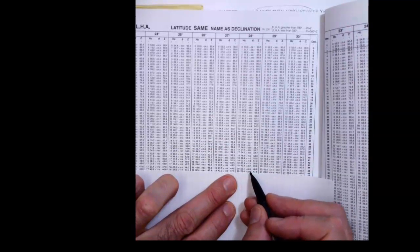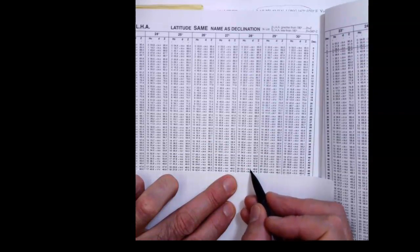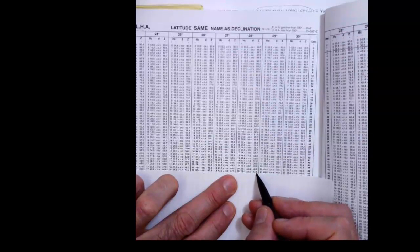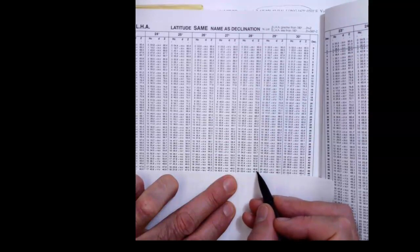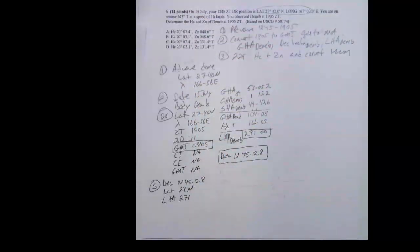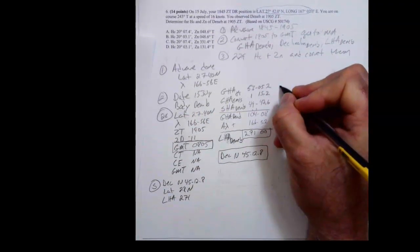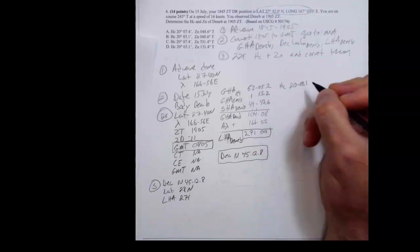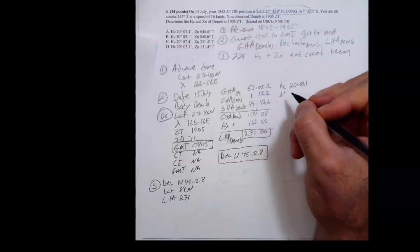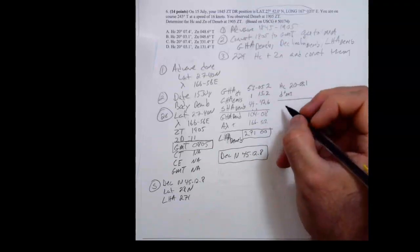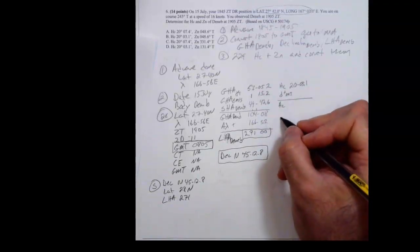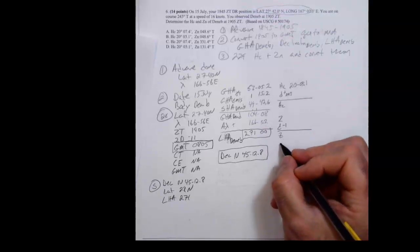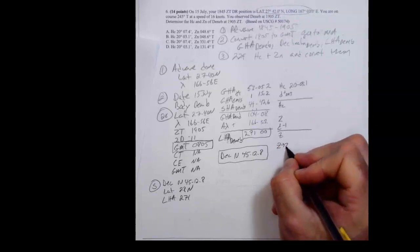My HC is 20°03.1'. My D factor for the HC is positive 20.3. And then my Z is 48.8'. The next Z is 47.8'. So the difference between those is minus 1. So I'm going to say HC from the book was 20°03.1'. And my D factor was plus 20.3. Once I do that correction, I'll have that. And then I got to do the same thing for Z. My D factor, which I know is minus 1. I'm going to do my correction, and then I'll get my Z. And then let's not forget, I have to convert Z to Zn.